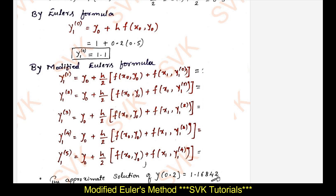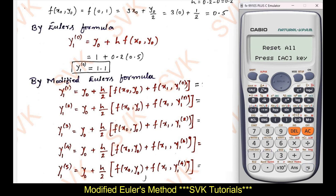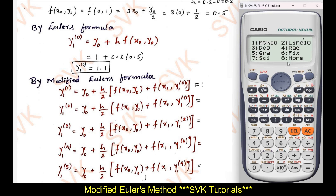Now I am going to explain how to solve this problem in a simple manner using your calculator. Take out your calculator. First clear all the memory by pressing Shift 9, then press 3, then press equal to clear all memory. Then fix 5 decimal places by pressing Shift, Mode, Fix, and selecting 5 decimals.